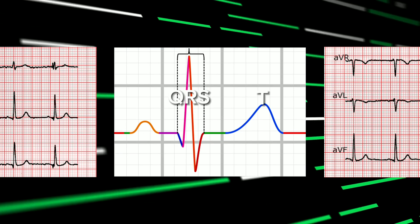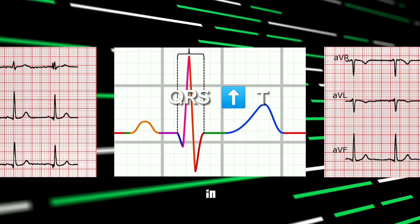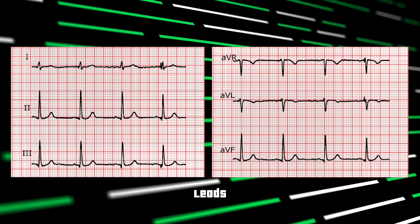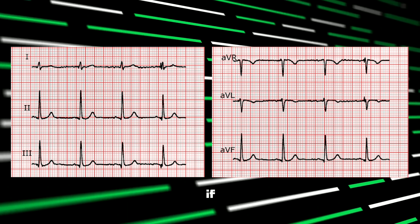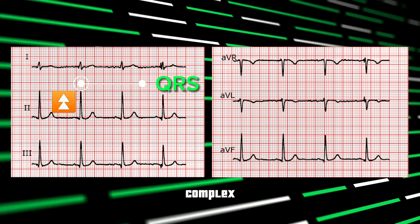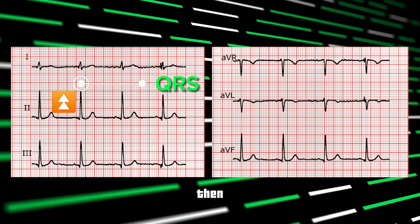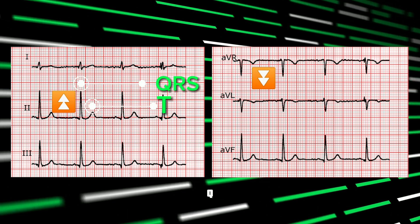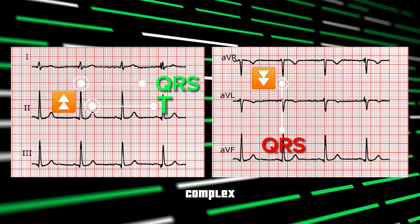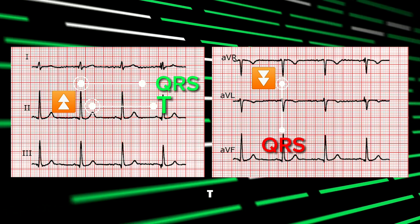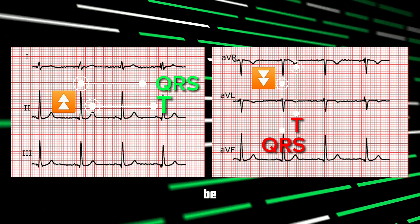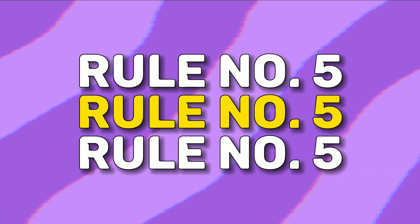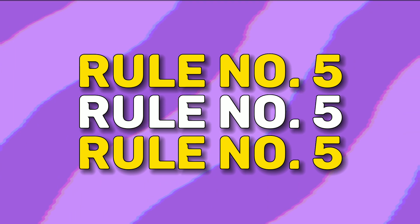Rule number 4: the QRS complex and T wave should both be in the same direction in all limb leads. If the QRS complex is upward, the T wave should be upward as well; if the QRS complex is downward, the T wave should also be downward.